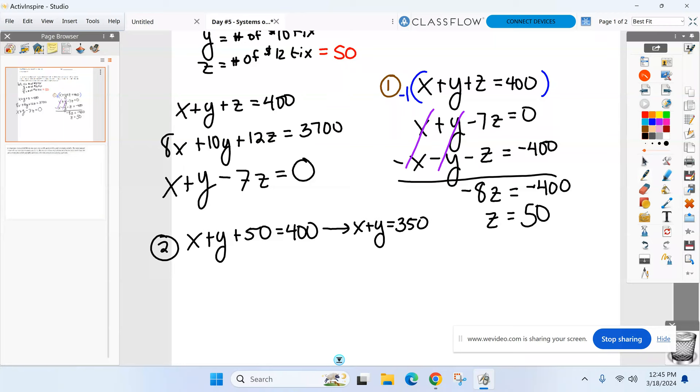Next one, 8X. Plus, plug in 50. 12 times 50. What do I have here? 12 times 50, 600? Equal to 3,700? All I did was plug in 50 for Z and got 600. Probably want to move it over, right? So it looks like the other one. So 8X plus 10Y equals 3,100.